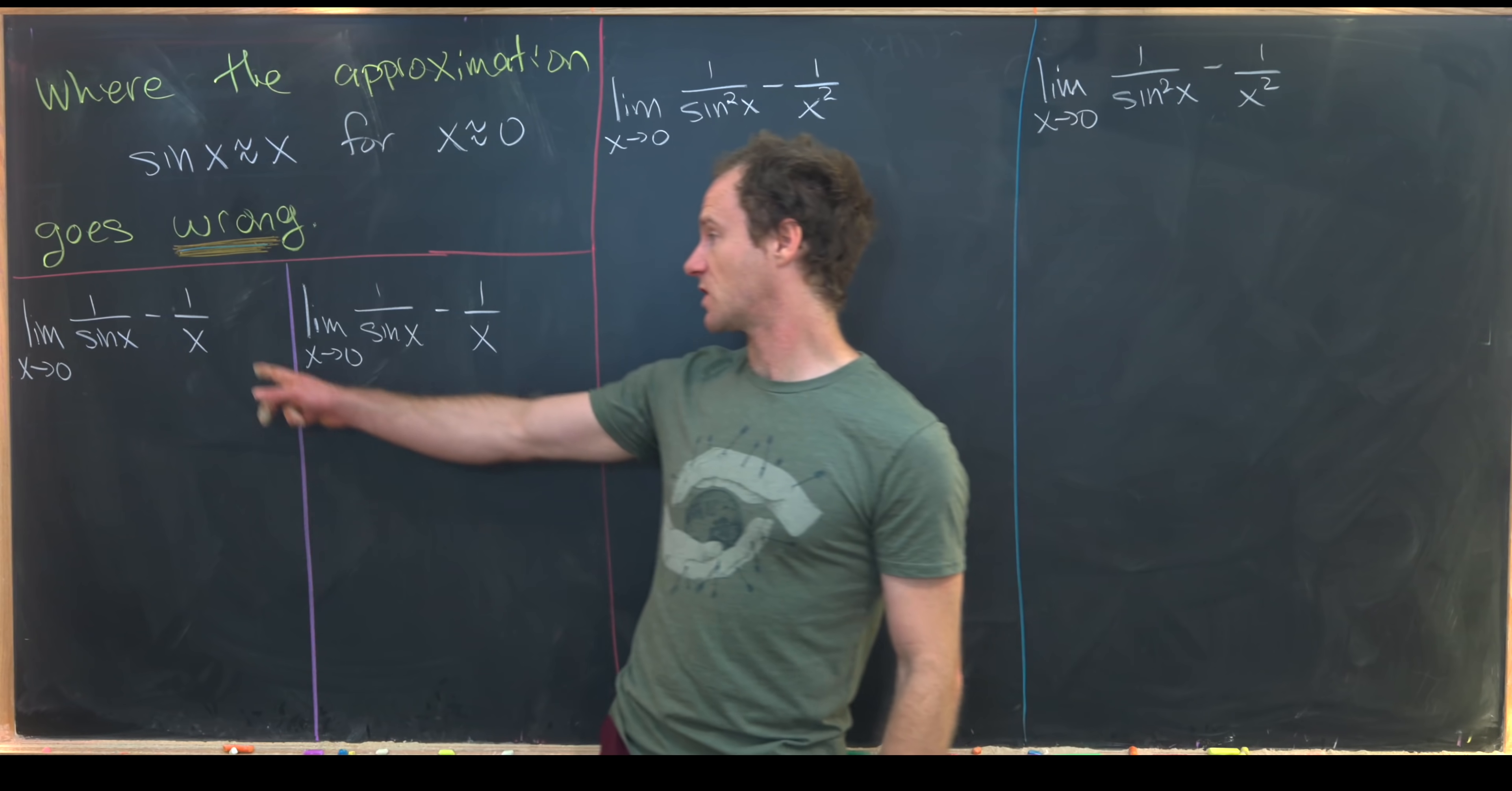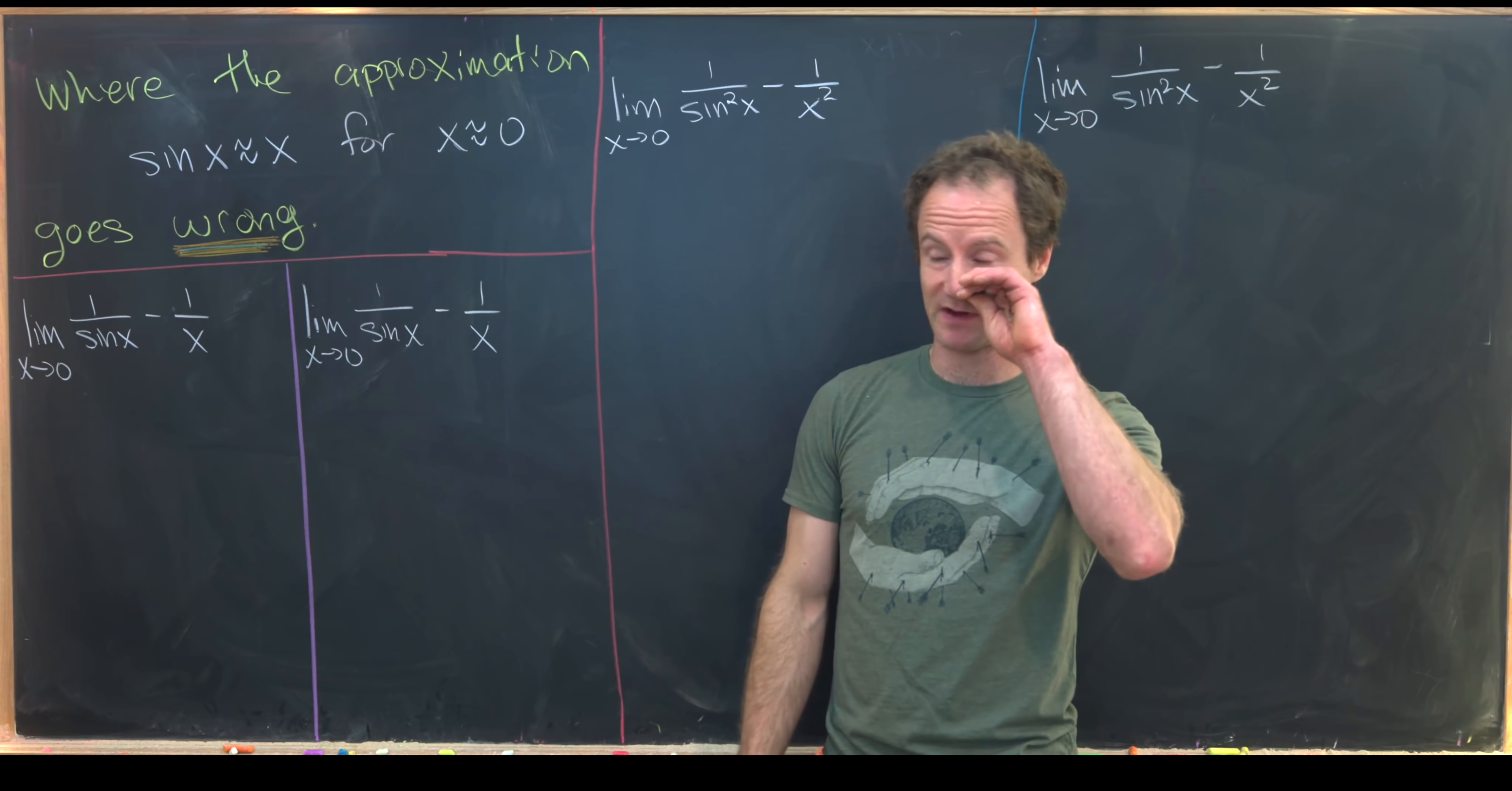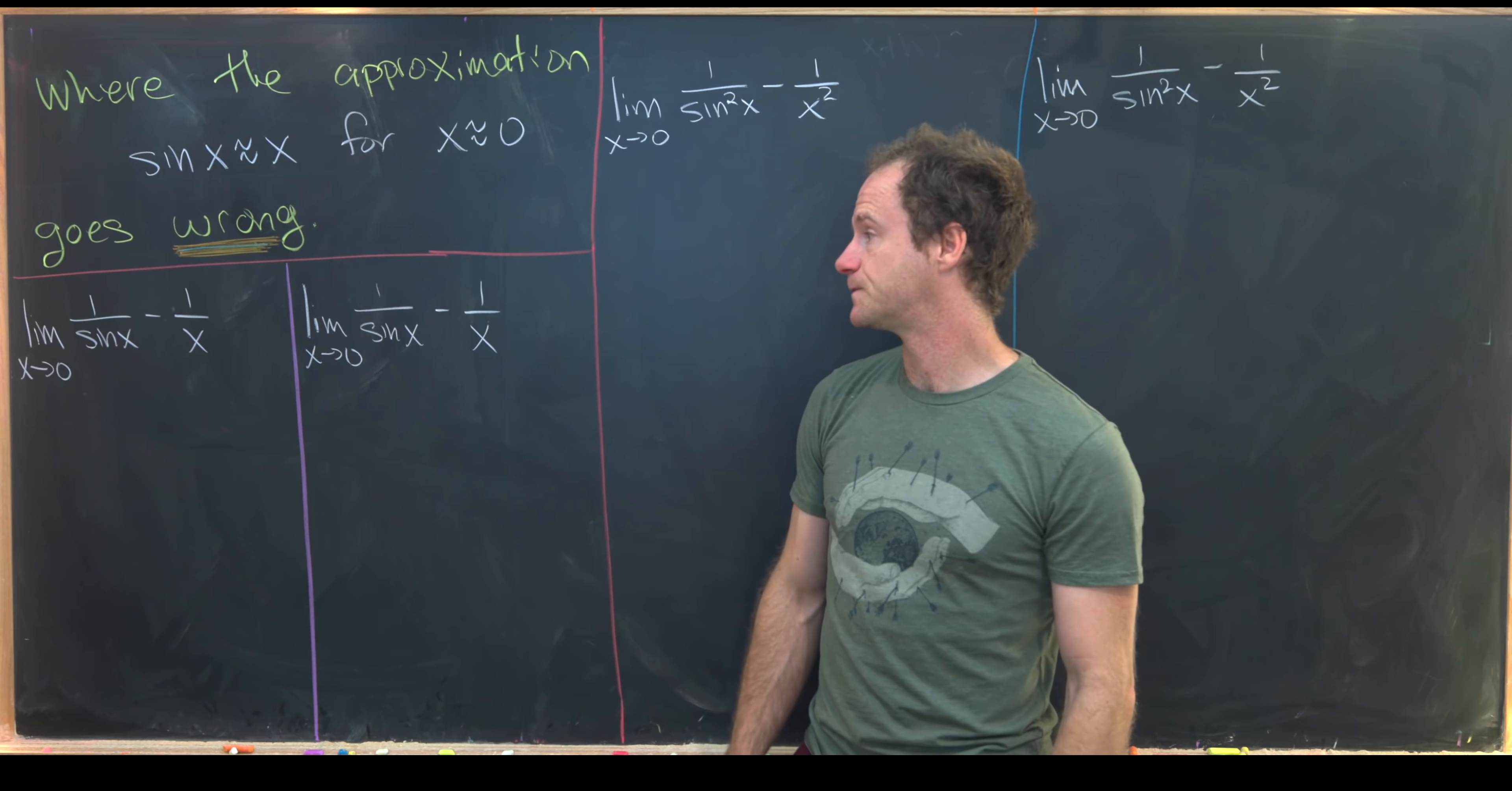Okay, so first we want to look at the following limit. Well, I've got two copies of that limit because we're going to calculate it two ways. One using this approximation and the other using more formal limit arguments.